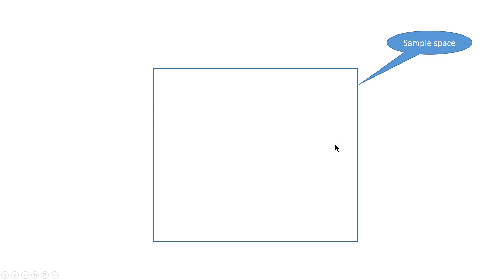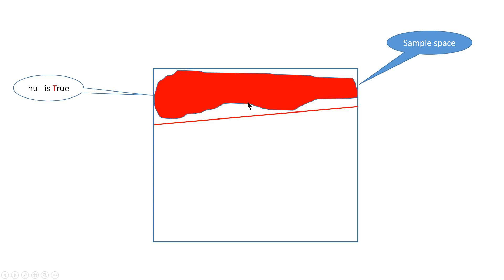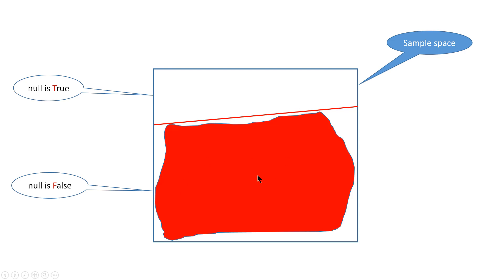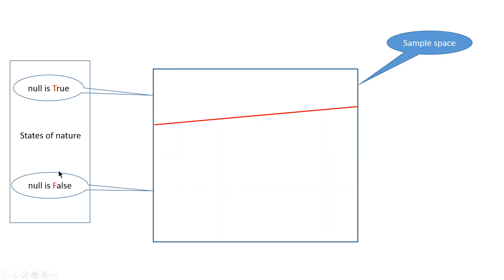Here we'll look at two possibilities. One is that the null is true, this whole area above the red line. Another possibility is that the null is false, this whole area below the red line. What we have here on the left side are the possibilities that the null is true and null is false. They are called states of nature because we don't have control over them.